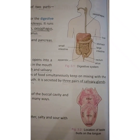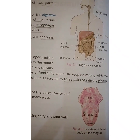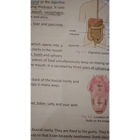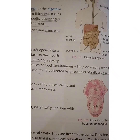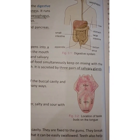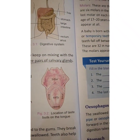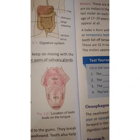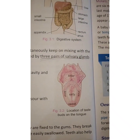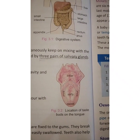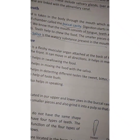The three pairs of salivary glands are: the parotid gland, found in front of and just below each ear; the submandibular gland, located below the jaw; and the sublingual gland, found under the tongue. These glands produce saliva and empty it into the mouth through openings called ducts.